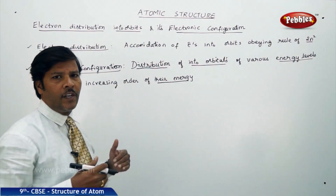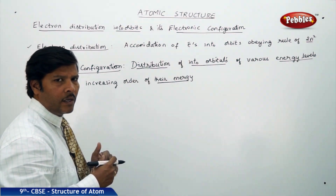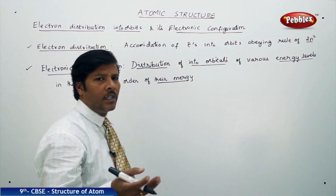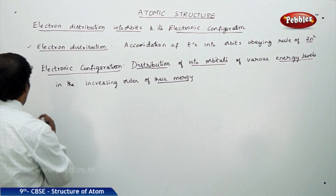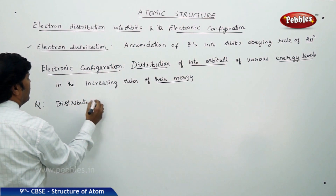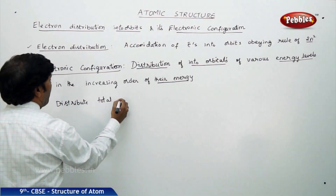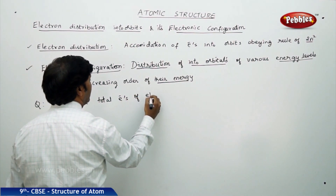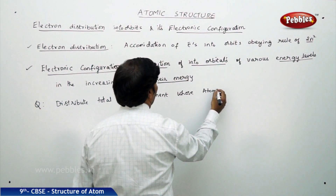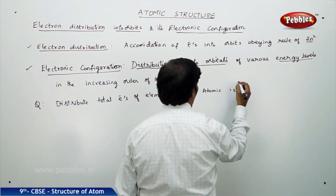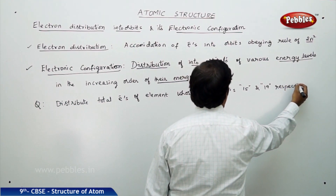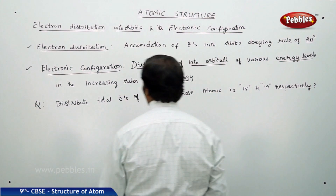I am giving you two different statements for electron distribution and electronic configuration just for convenience and for learning the higher level of writing electronic configuration. For example, let us distribute the total electrons of elements whose atomic numbers are 15 and 19 respectively.